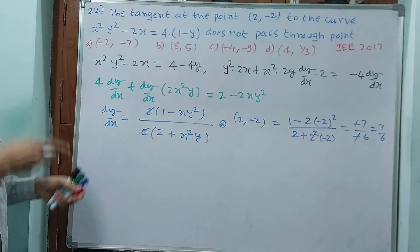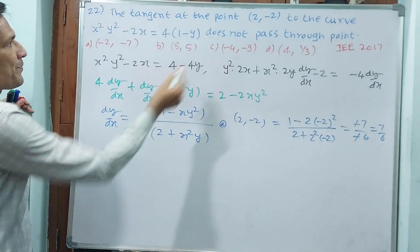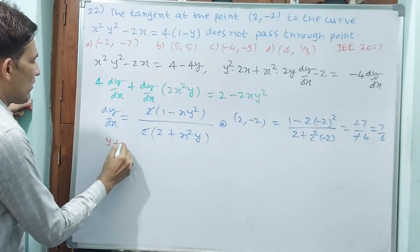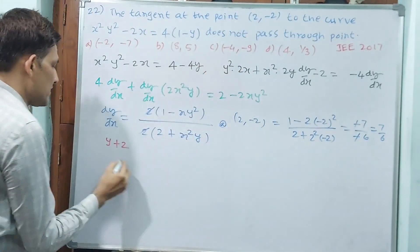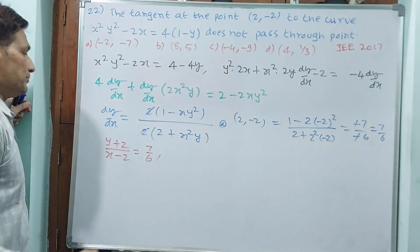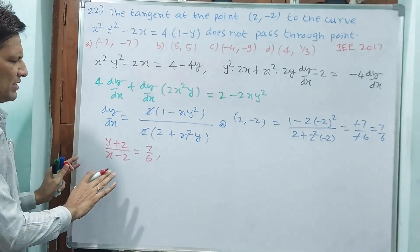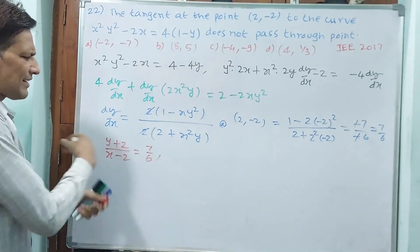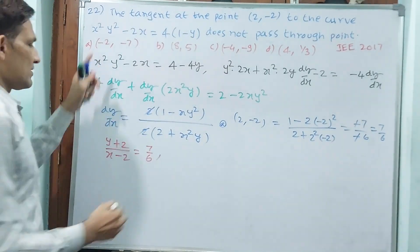Let me find the equation also. See, y + 2 = (7/6)(x - 2). This is the equation. You keep like this only. You don't simplify further. You substitute this.